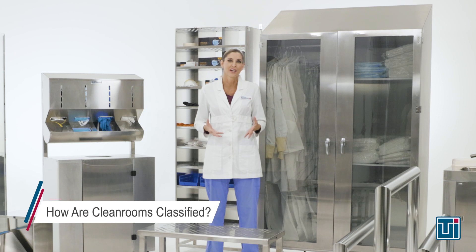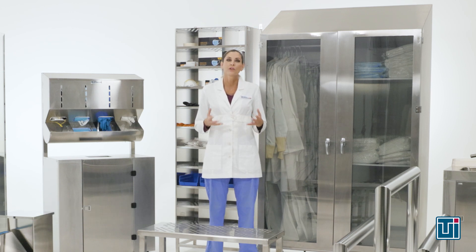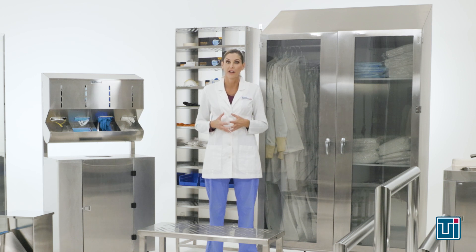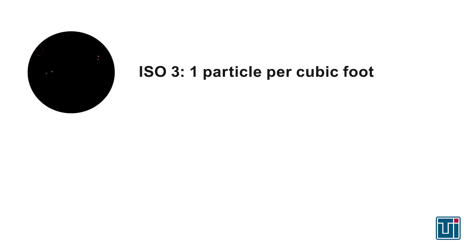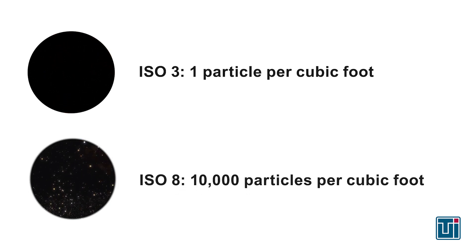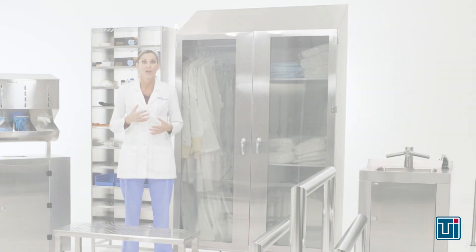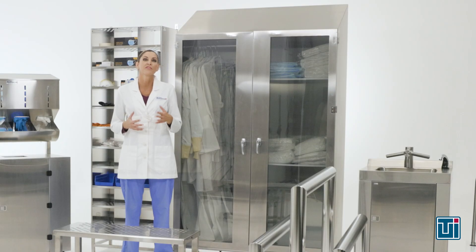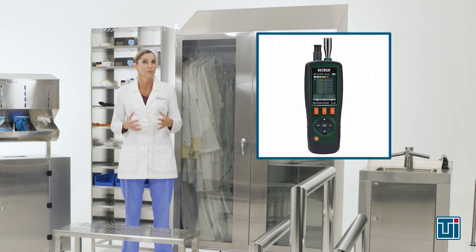How are clean rooms classified? The International Standards Organization, or ISO, categorizes clean rooms based upon the quantity of particles per cubic foot of air. The cleanest classification, ISO 3, denotes an environment containing one particle per cubic foot. The least rigorous classification, ISO 8, specifies an atmosphere containing 10,000 particles per cubic foot.